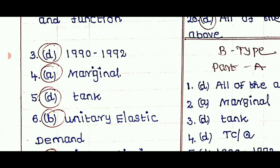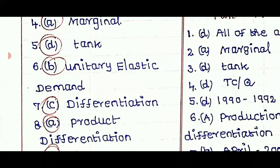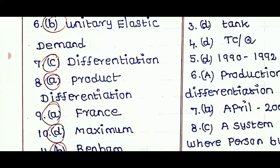Maximum. So 6th option B, Unitary Elastic Demand. 6th option B, Unitary Elastic Demand. 7th option C, Differentiation. 8th option A, Product Differentiation.